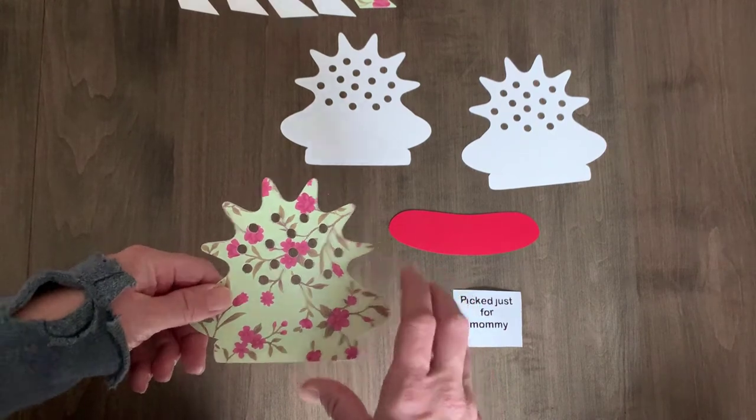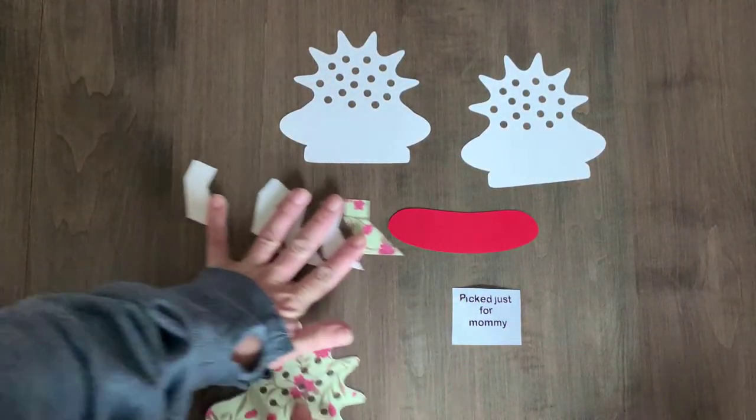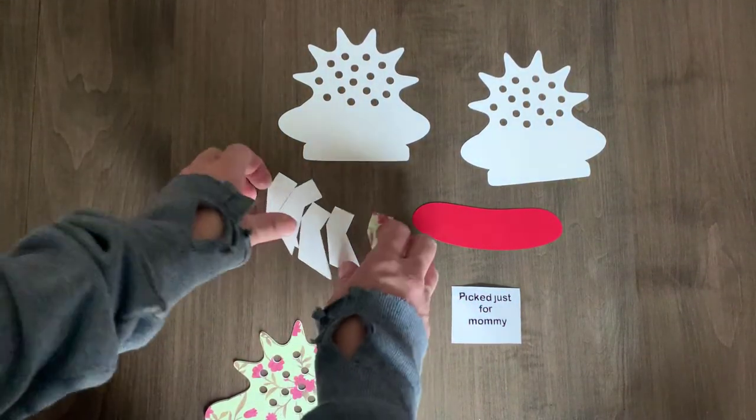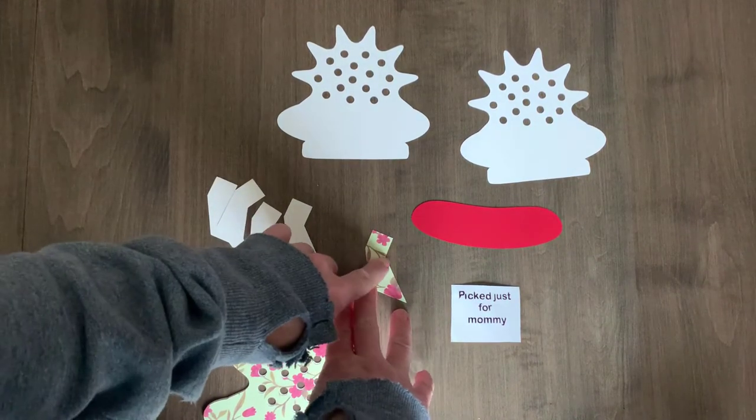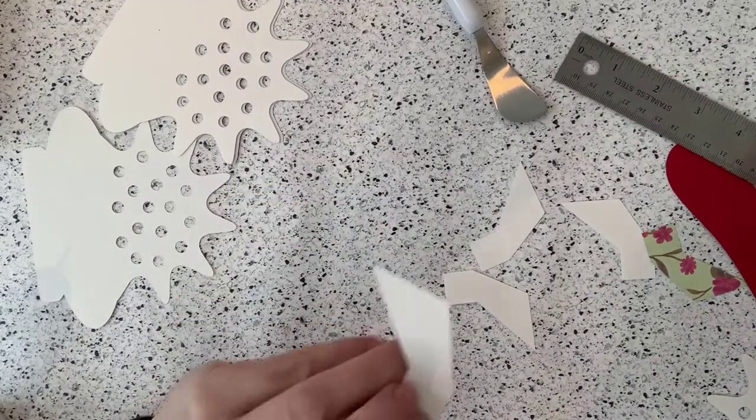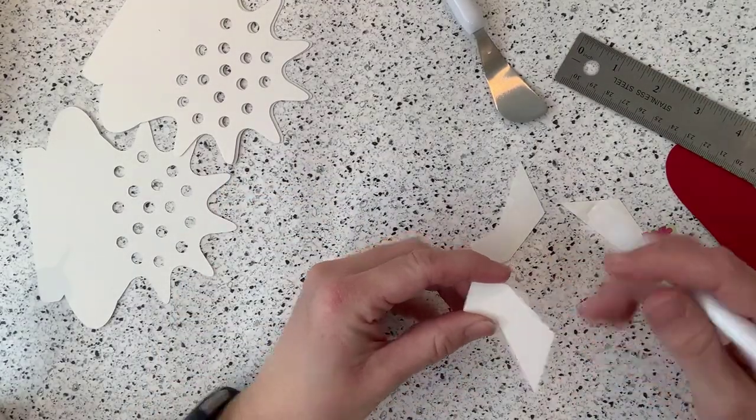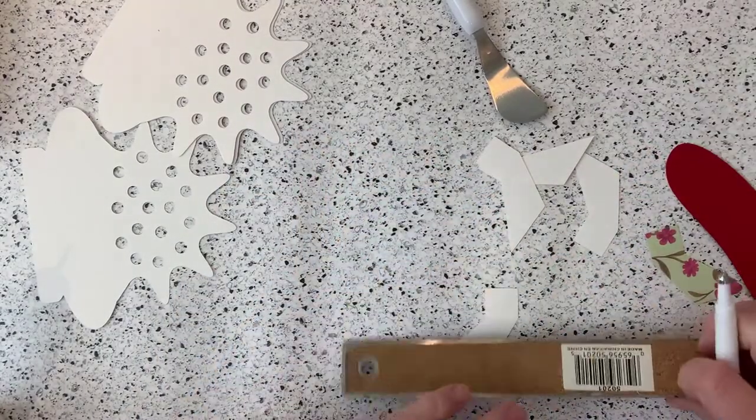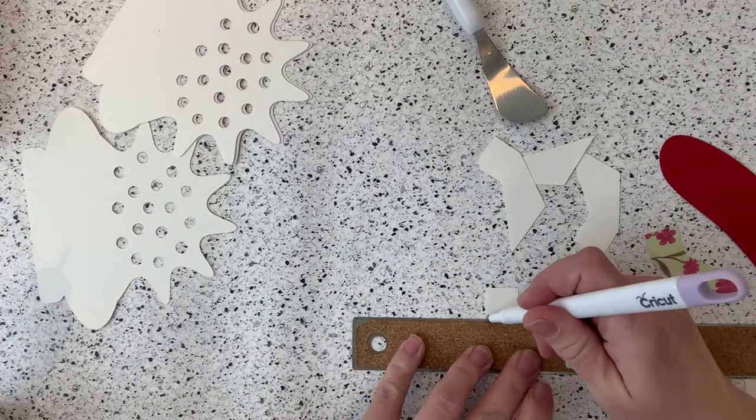After that we need to glue the five base pieces together. We'll just need to make sure that we add a score line so that that helps us fold the base pieces later. Just using a ruler and a scoring stylus, pull a straight line through the base of each piece starting at the corner.